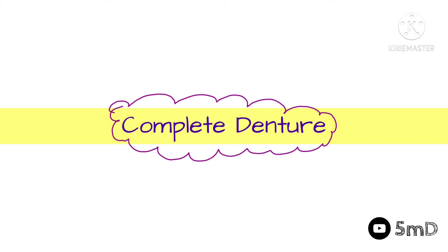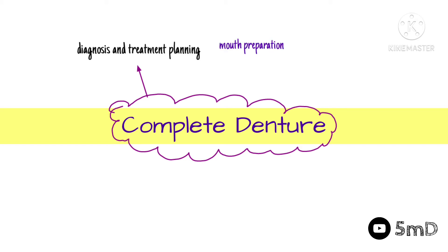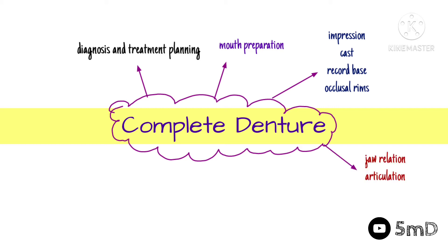In complete denture, we will first divide topics to coincide with the steps in the fabrication of a complete denture. We start with diagnosis and treatment planning, then mouth preparation to receive a complete denture, followed by impressions, casts, record bases, and occlusal rims. After fabrication of an occlusal rim we go for recording of jaw relation, after which we articulate the jaw-related casts along with the occlusal rims.